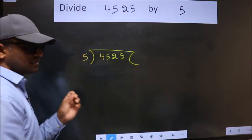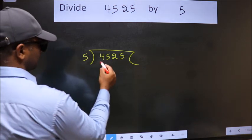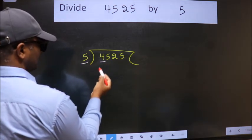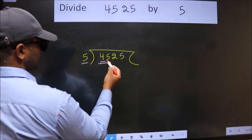This is your step 1. Next, here we have 4, here 5. 4 is smaller than 5, so we should take two numbers: 45.